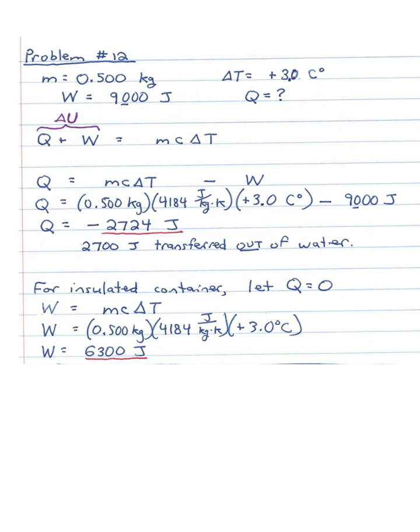Let's look at problem number 12. It says: in a closed but uninsulated container, 500 grams of water are shaken violently until the temperature rises by 3 Celsius degrees. The mechanical work done in the process is 9 kilojoules. How much heat is transferred to the surroundings during the shaking? And how much mechanical energy would have been required if the container had been perfectly insulated? The given information: mass is 500 g, work done to the system is 9,000 J, and change in temperature is +3°C. We want to find Q.